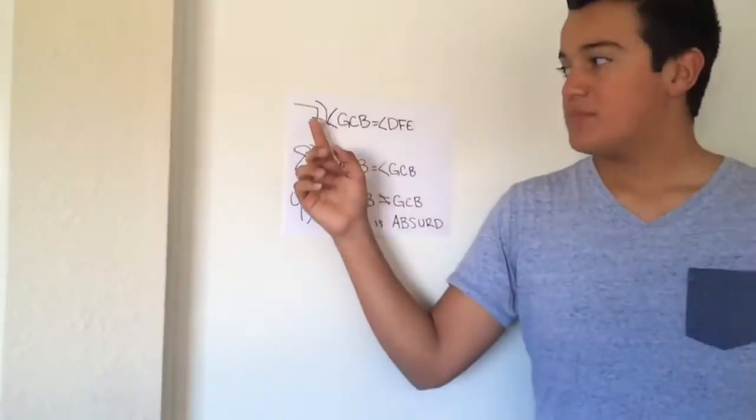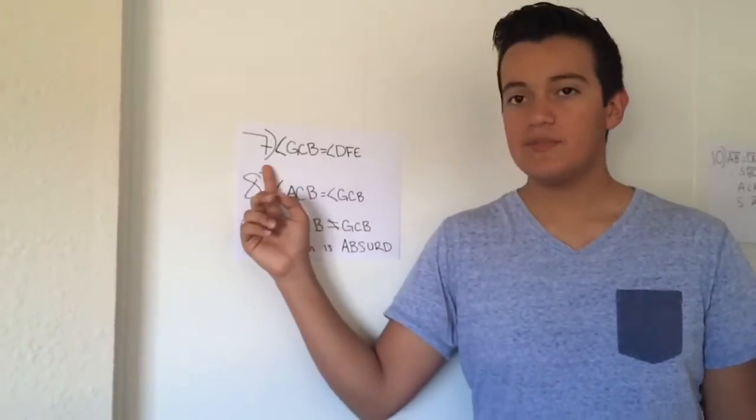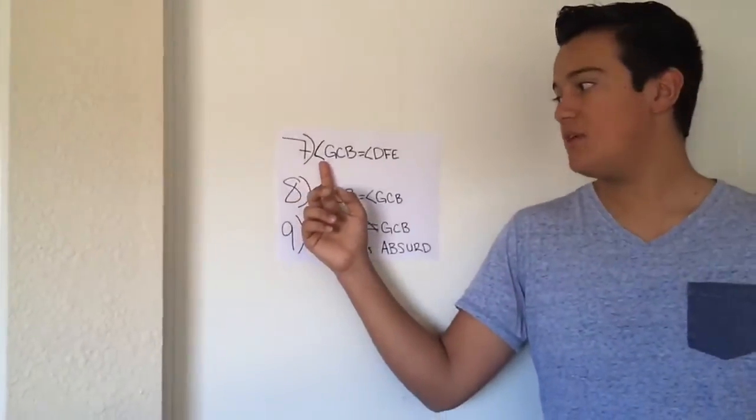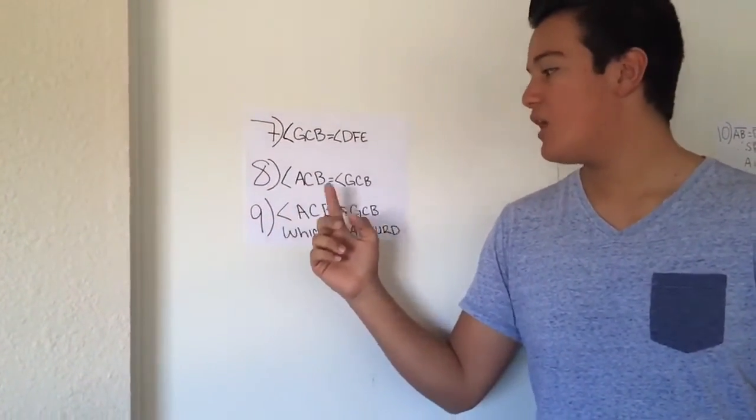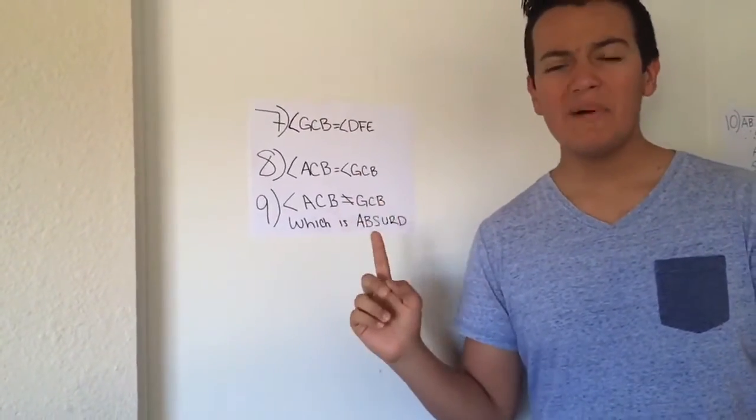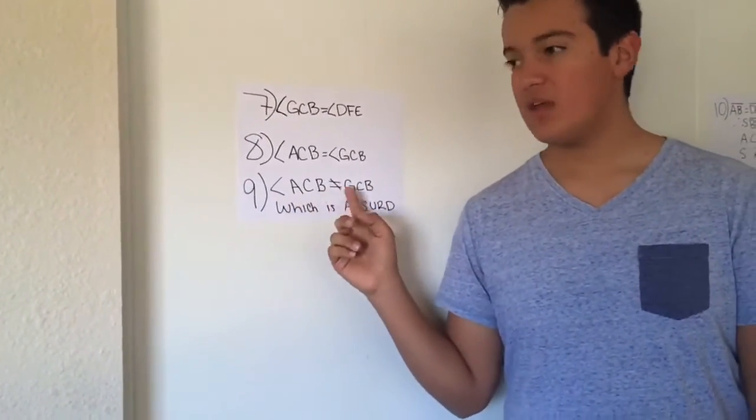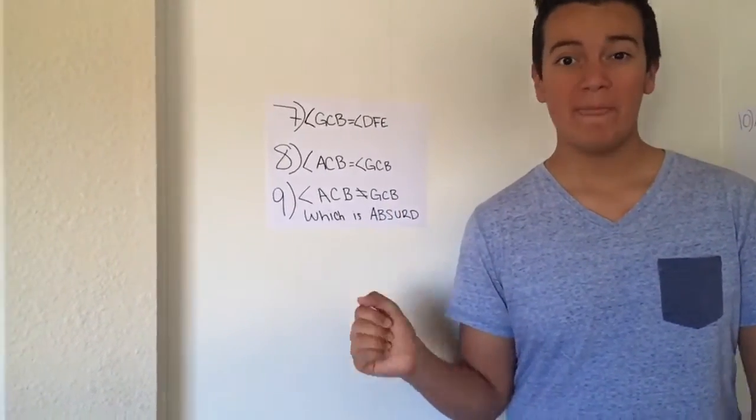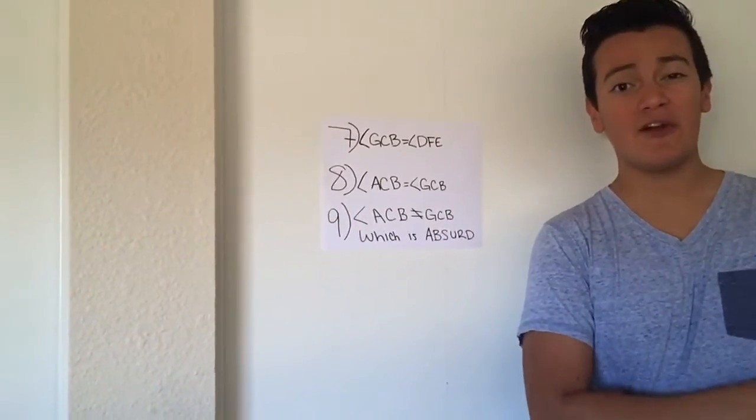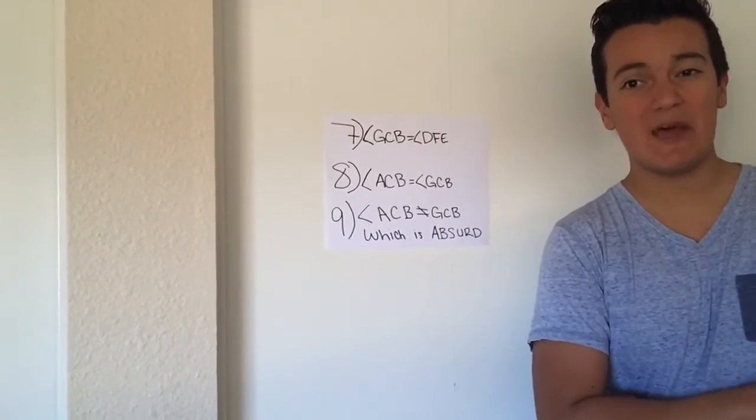Then we get to step seven, eight, and nine. In step seven, we have to know that GCB and DF are equal. And in step eight, we need to know that ACB and GCB are equal. But ACB and GCB cannot be equal, which is absurd. This is one of those propositions called a reductio, which means it does not make sense.